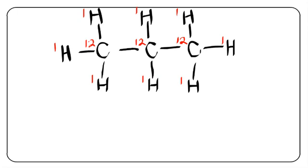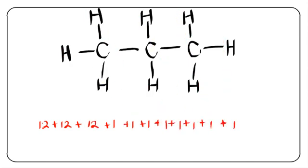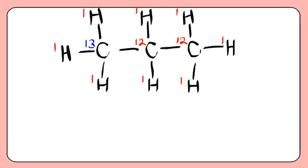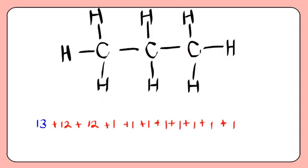So most molecules will have a mass of 12 plus 12 plus 12 plus 8, which will be 44. However, a small proportion of propane molecules will have a mass of 13 plus 12 plus 12 plus 8, which equals 45. That is, one greater than the molecular mass of the compound.